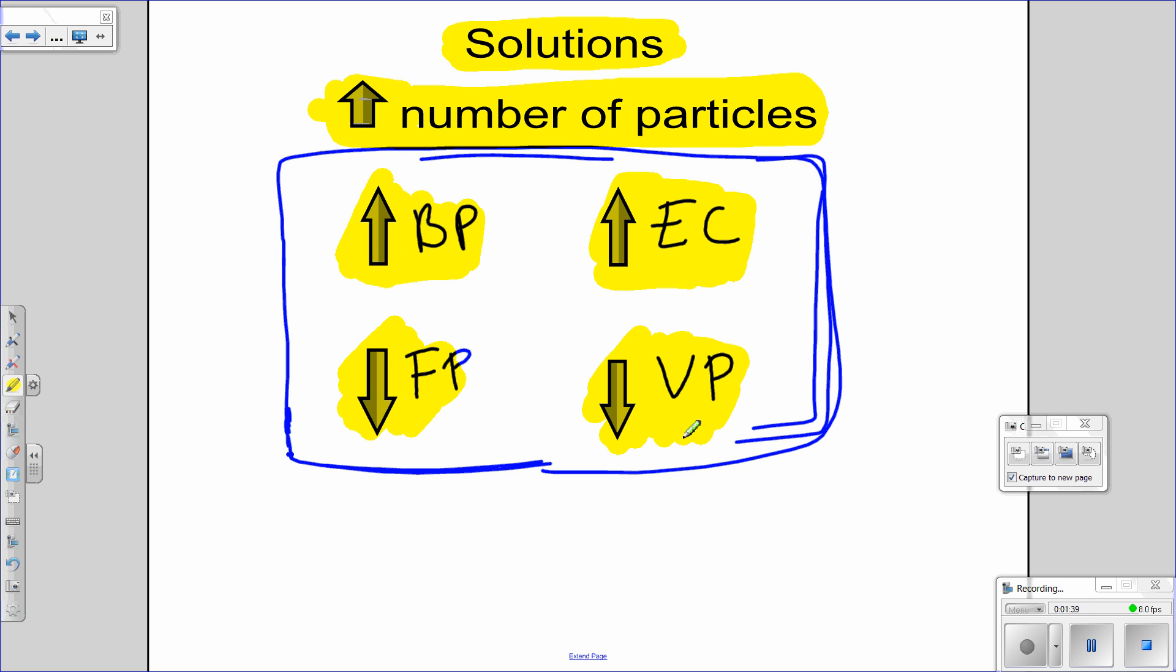So you would put that into your multiple choice booklet and also your free response. There tends to be a lot of multiple choice questions that involve solutions. So you'll put this right in the front page of your book right as you start. First thing, as soon as you crack it open, you record the intermolecular force one and the other one, that way you're not thinking about it while you're taking the test. You can just go back and refer to it as a table.